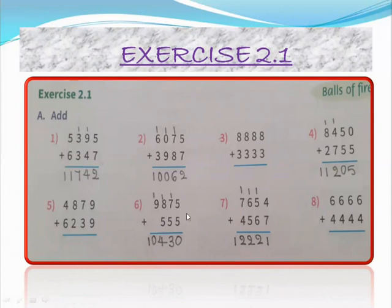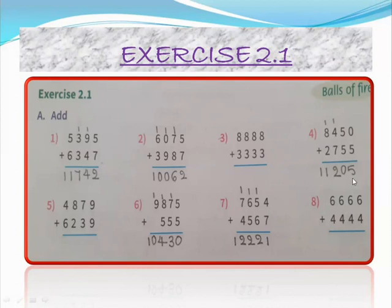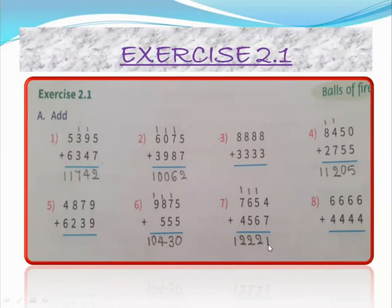Like that, do the other problems the same way. Second problem: 6,075 plus 3,987 — answer equals 10,062. Third one you have to do. Fourth: 8,450 plus 2,755 — answer equals 11,205. Fifth one you have to do. Sixth: 9,875 plus 550 — answer equals 10,430. Seventh: 7,654 plus 4,567 — answer equals 12,221. Eighth one, do it the same method.